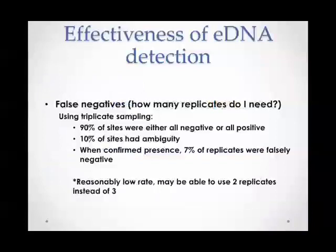We were curious about false negatives — how many replicates do we actually need to minimize them? At each site we used triplicate sampling, filtering three one-liter water samples per visit. We found that 90% of our sites were either all negative or all positive. Only 10% had some ambiguity. When we had confirmed presence — meaning at least one of our three replicates was positive for Chinook — only 7% of the replicates were falsely negative. For our goals, this may be a reasonably low rate, and we might be able to get away with just two replicates per site visit to include more sites.